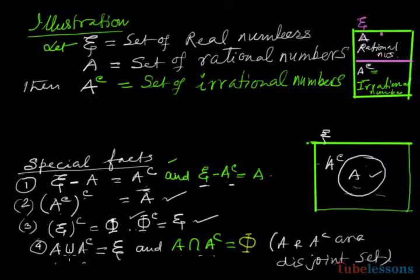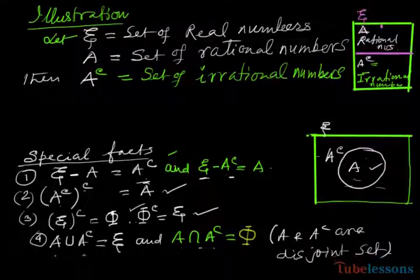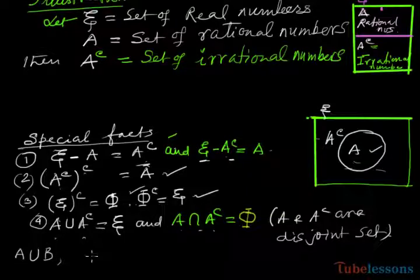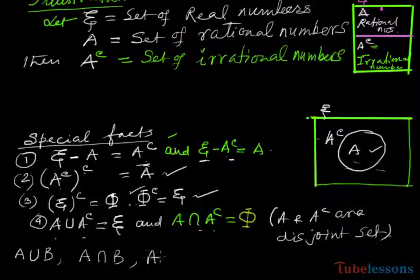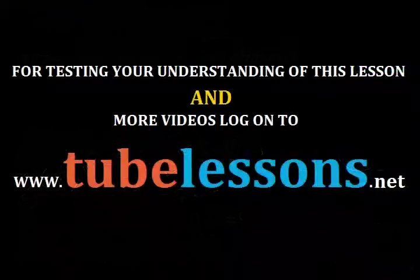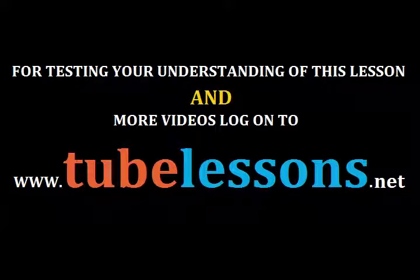So we have covered 4 operations: A union B, A intersection B, A minus B which is the difference of two sets, and complement of set A. Thank you. For testing your understanding of this lesson and more videos, log on to www.tubelessons.net.